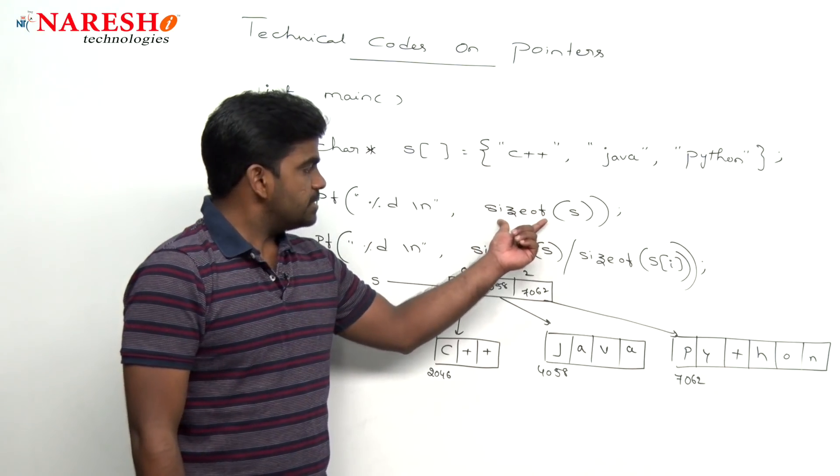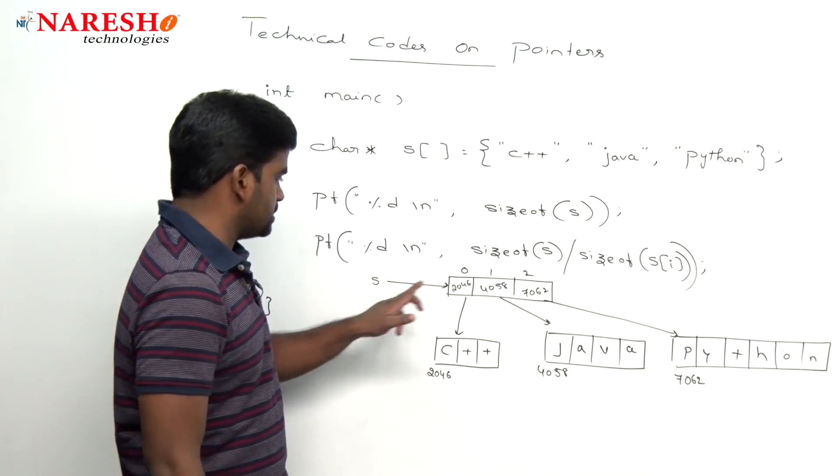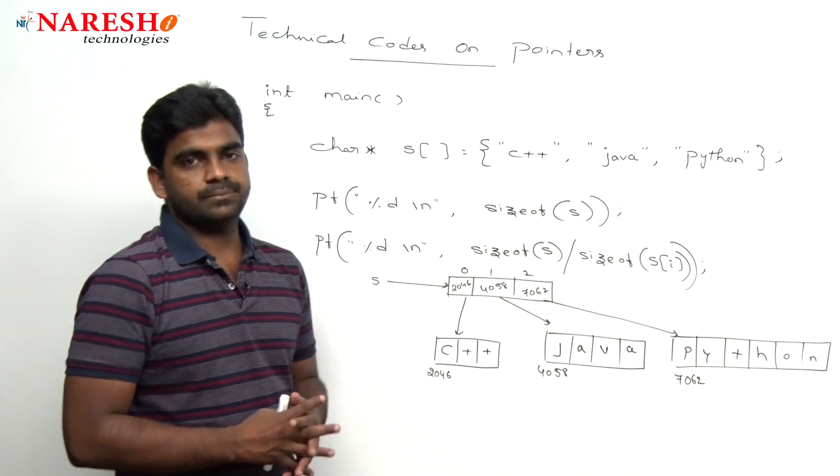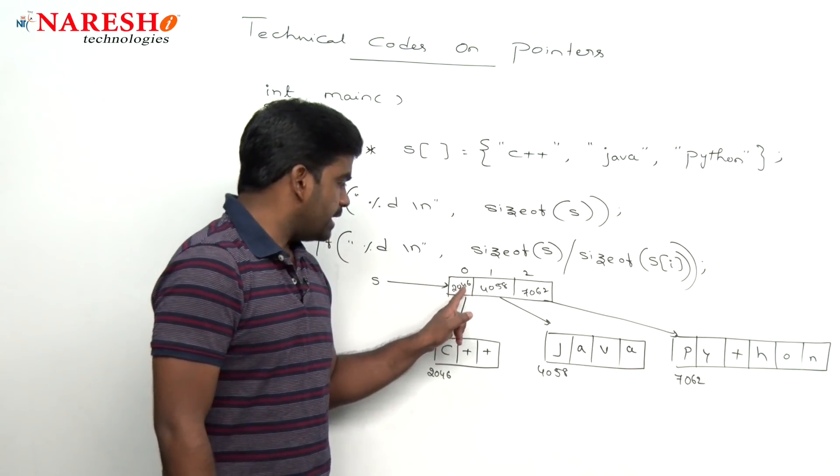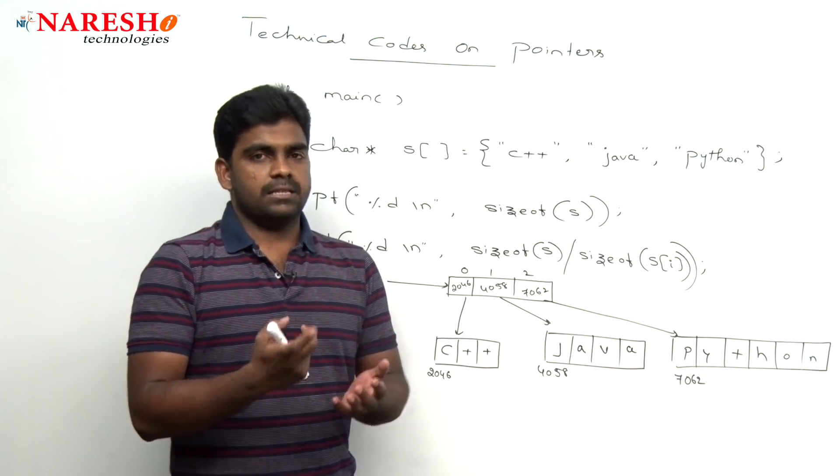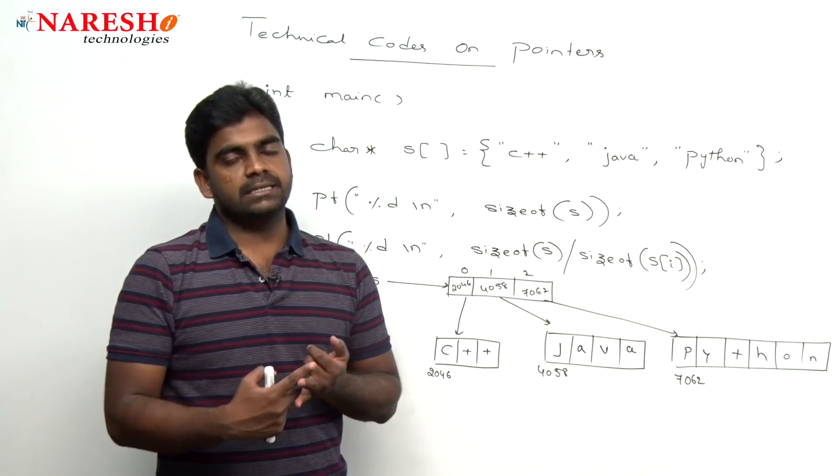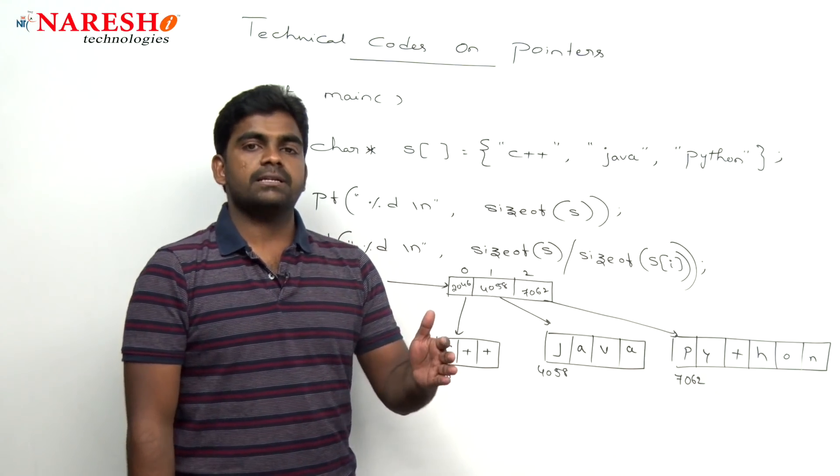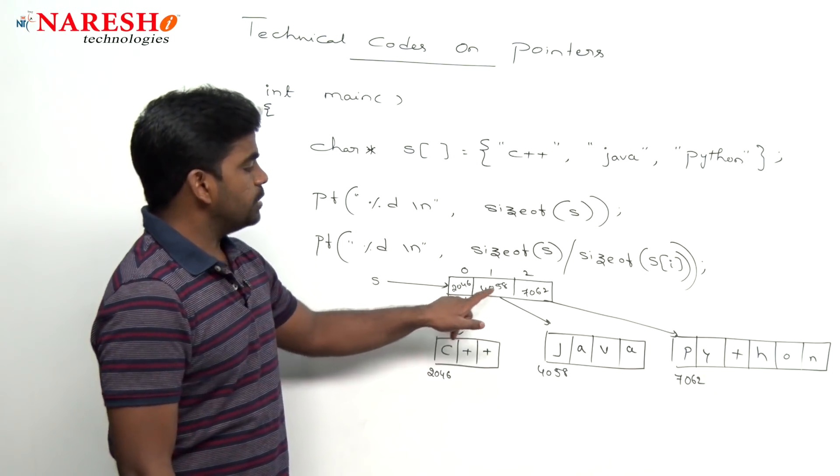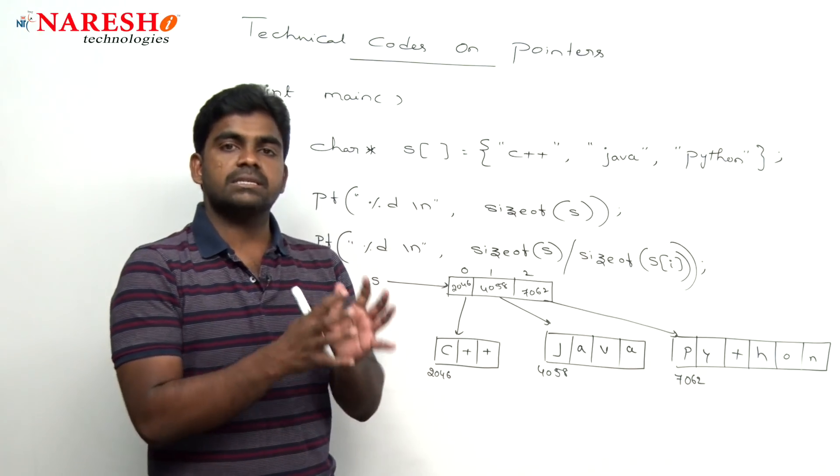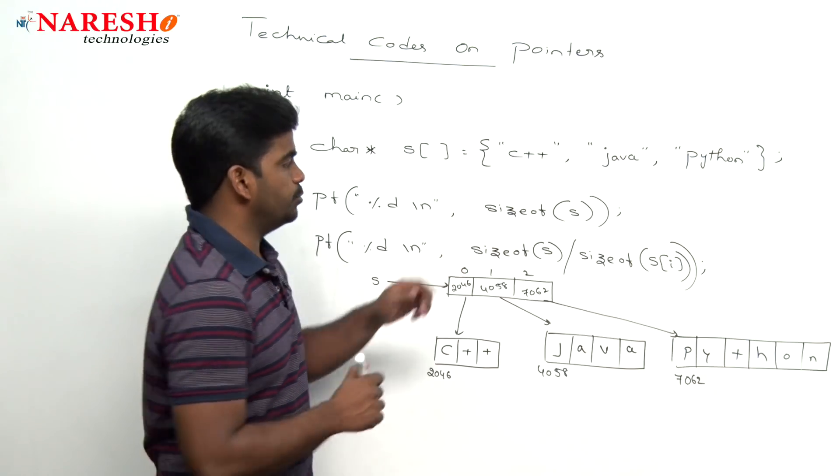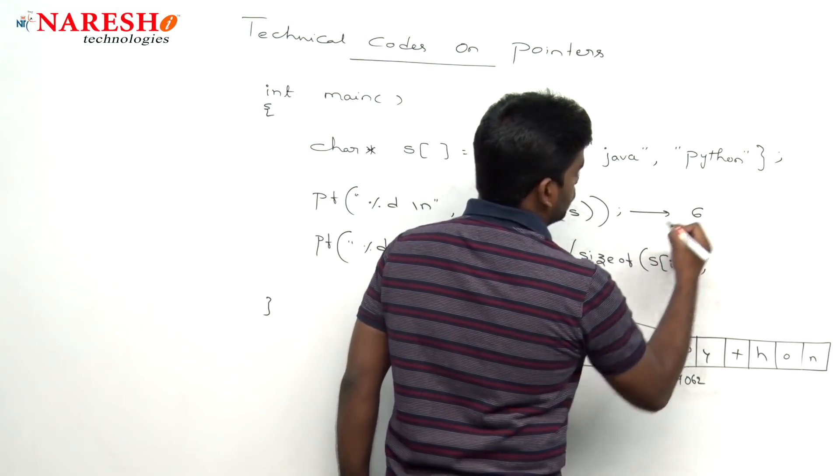Now here whenever we are writing that size of S, it is nothing but what is the size of array? How many elements are there? Three elements are there. What type of elements? These are not characters, these are addresses. And we know that address is nothing but a pointer. Pointer size and integer size both are same, but the pointer size will change from compiler to compiler. So here it is total three pointers are there. If it is a 16 bit compiler, 3 into 2 bytes, 6 is the output.